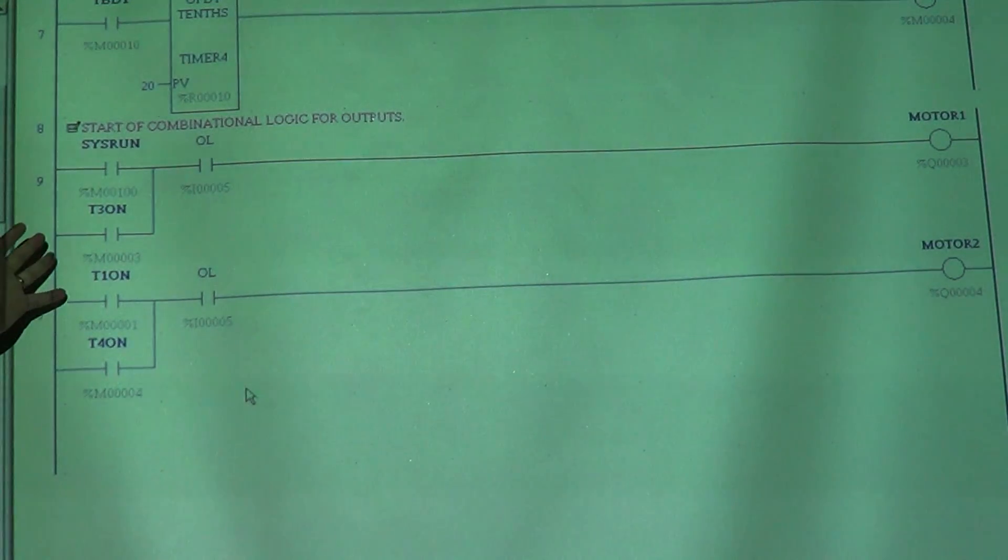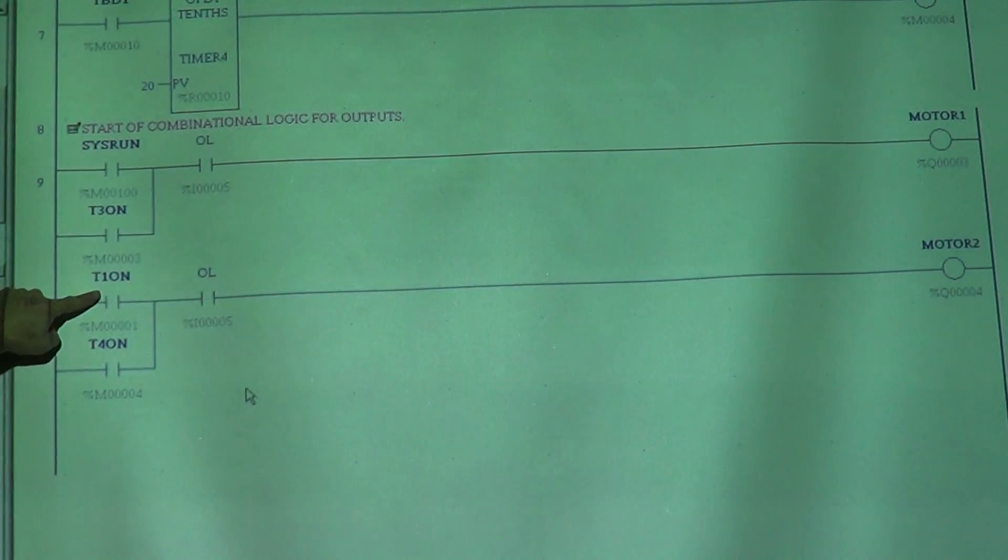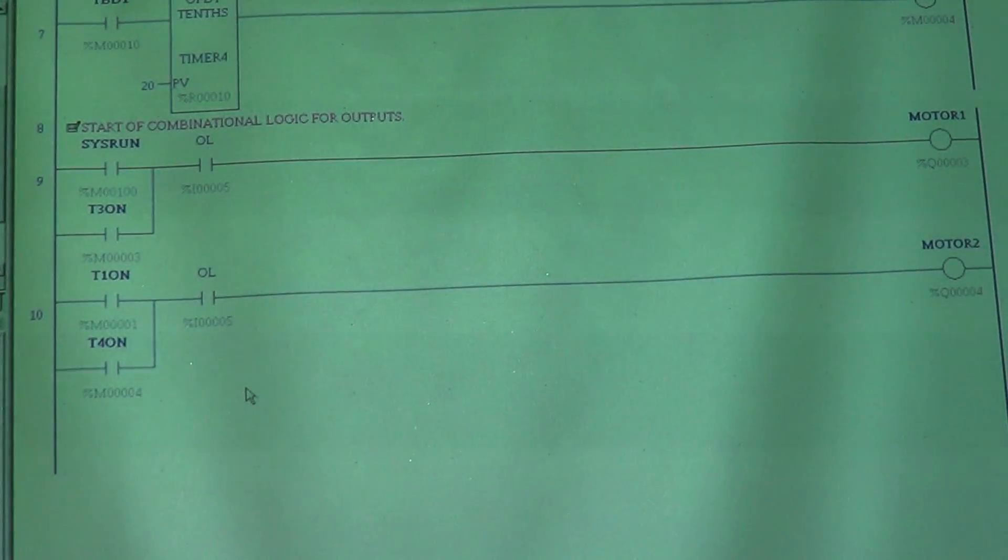Now at the very end, we get down, comment to combinatorial logic for our output. Sys run, timer, timer, timer, timer, and you've got motor one, motor two. Now again, you need to use your timing diagram to figure this out.